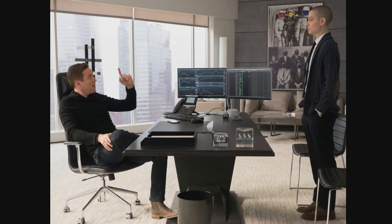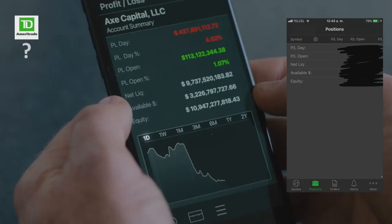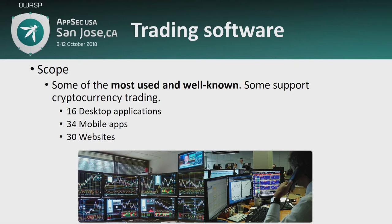Probably many of you have seen this Netflix series — this is the Bloomberg terminal. I didn't have access to this one, but I did have access to what I think is Ameritrade. So let's go to the core of my research, the findings. I analyzed 16 desktop applications — standalone applications that run on Windows or Linux — 34 mobile apps, and 30 websites, from these brokers.